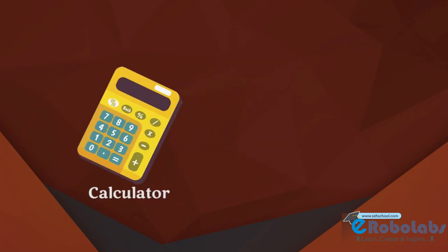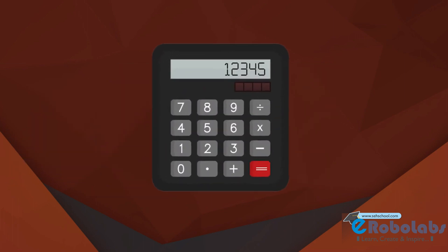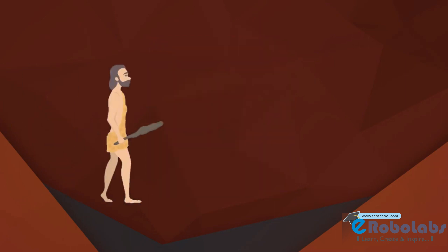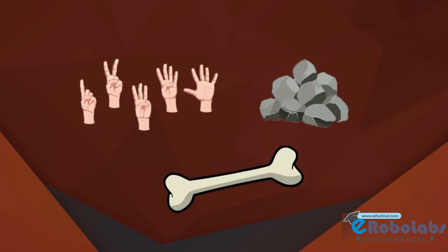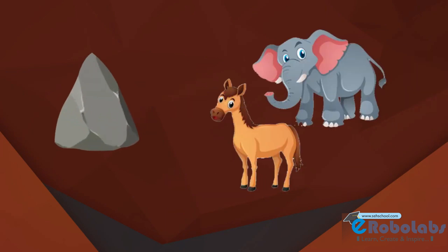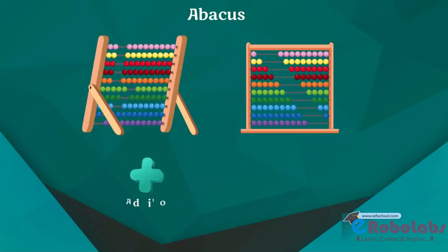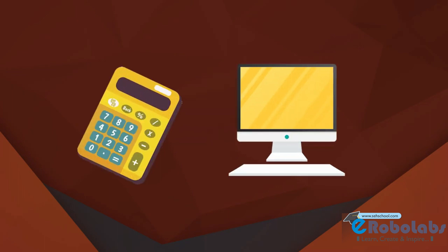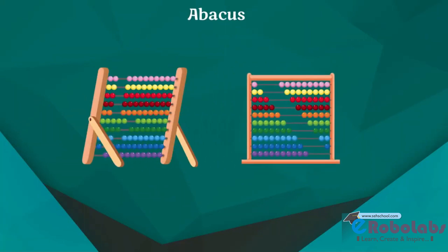You have seen people using calculating devices to do calculations, such as calculators, computers, etc. But before these devices were invented, there were other calculating devices that were used. In early days, when our ancestors used to reside in caves, counting was a problem. They used stones, fingers, and bones for calculating. When they started using stones to count their animals or possessions, they never knew that this would one day lead to the computer of today.